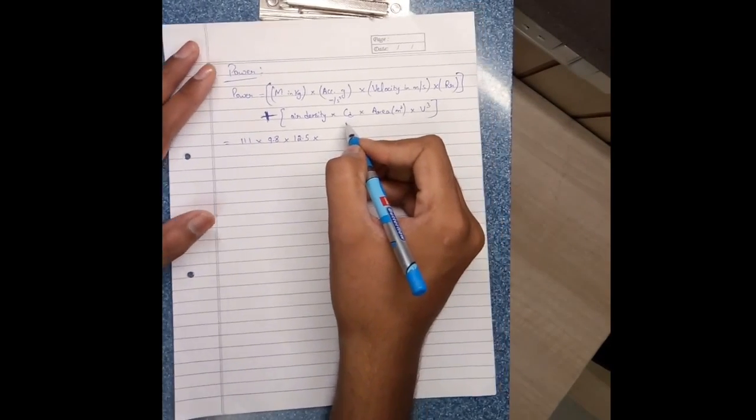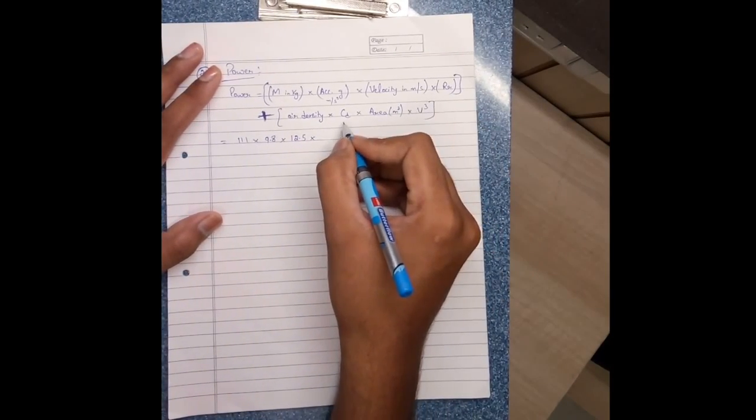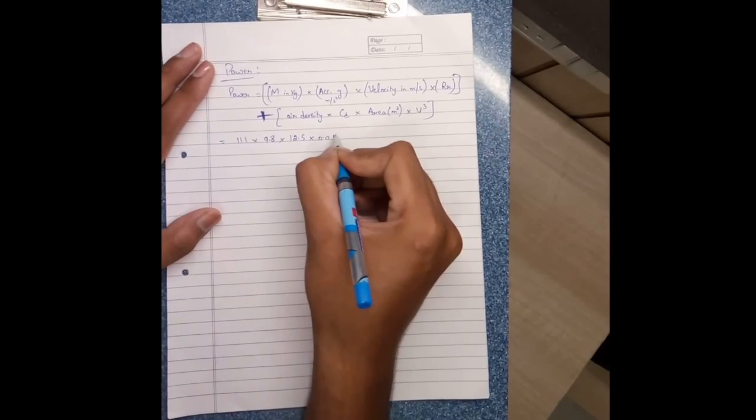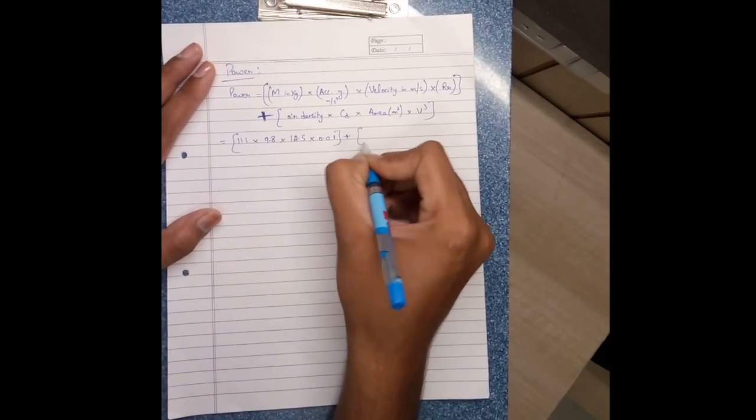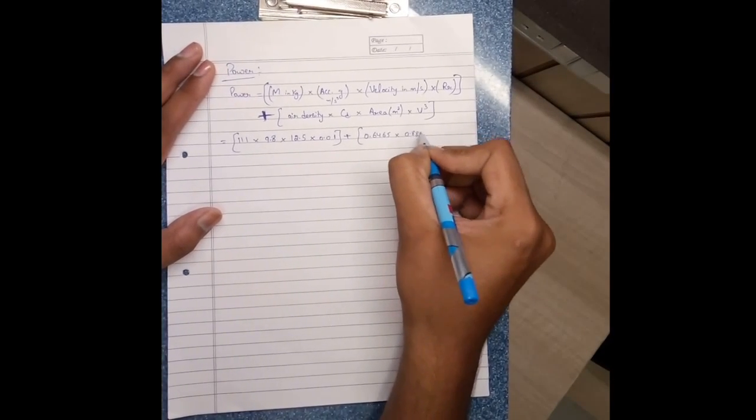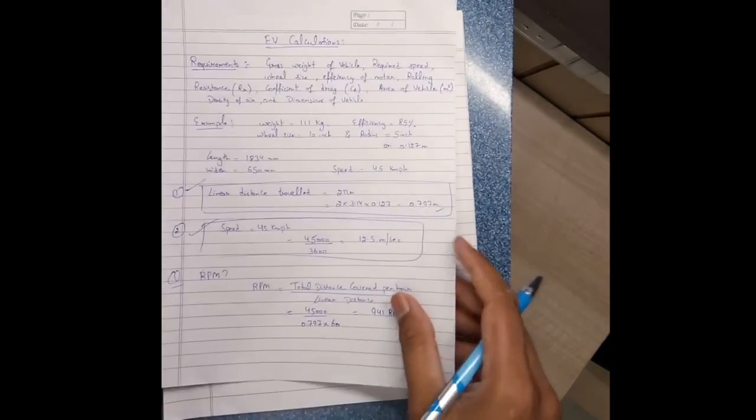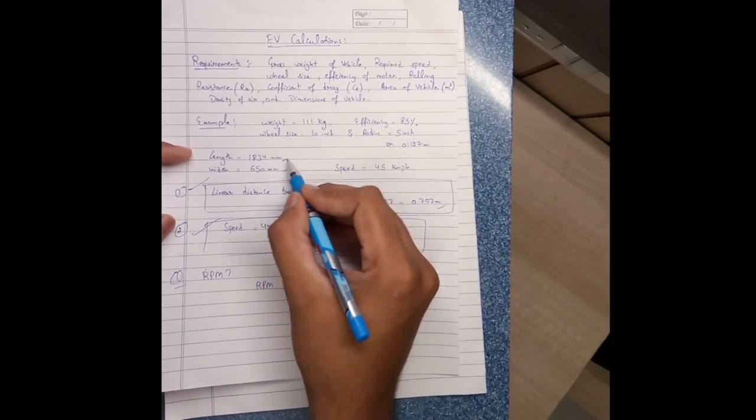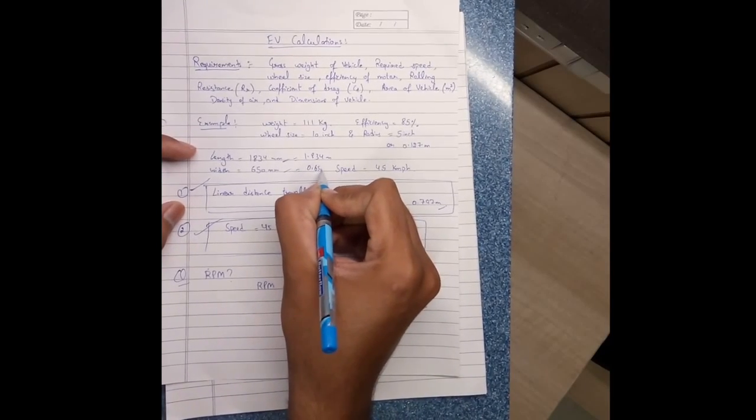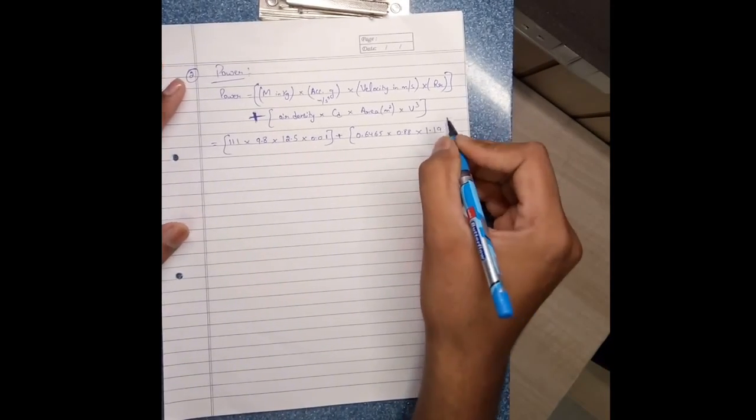Coefficient of drag and rolling resistance values come from table. This table I also given in my blog. 0.01 plus 0.6465, air density 0.88, coefficient of drag. Area comes from length times width, 1.834 meter times 0.650 meter. After multiply, that area is 1.19...